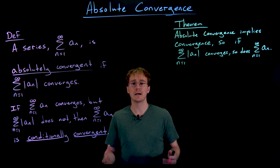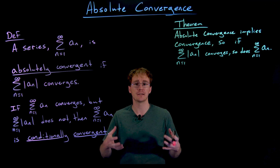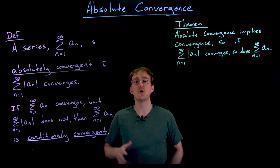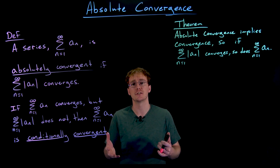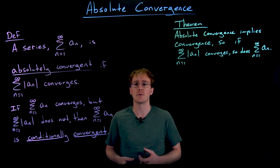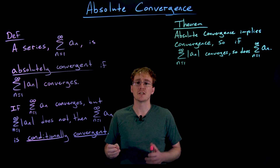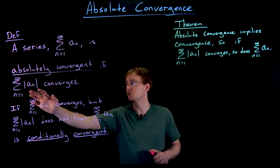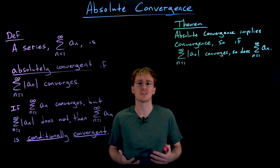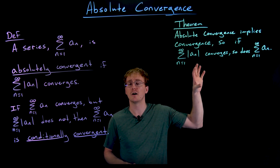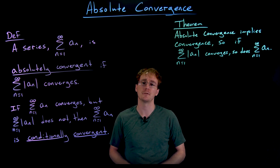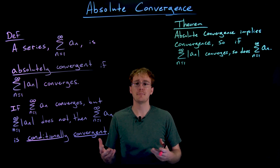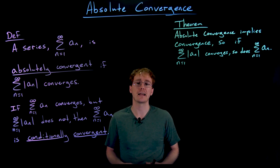An informal way to think about why absolute convergence is a stronger property that implies normal convergence: when we take the absolute value of the terms, no cancellation can occur, potentially making the sum larger. The sum of the absolute values of the terms is always going to be bigger than or equal to our normal series sum. So the normal series should always be smaller, and we can use something like a comparison test — if the bigger sum converges, the smaller sum must also converge.